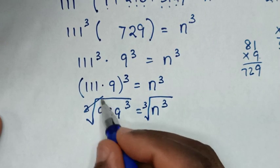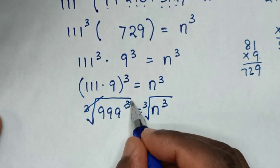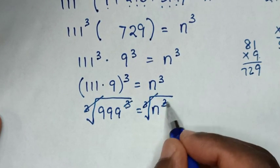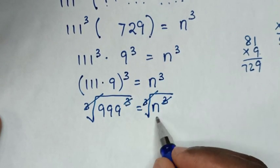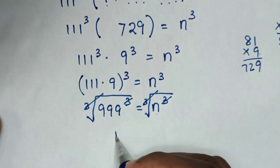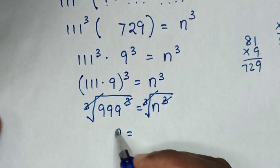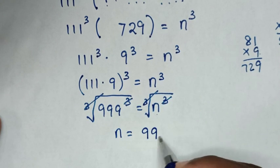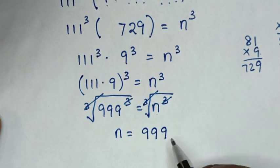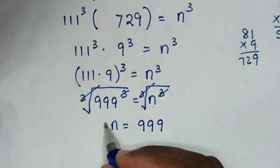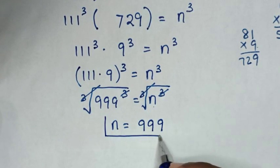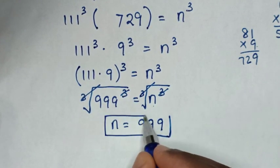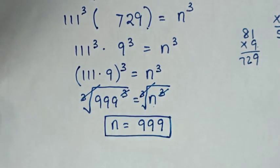The cube root will cancel the cube on both sides, so it will be n is equal to 999. Therefore, this is the final answer for the value of n in this problem.